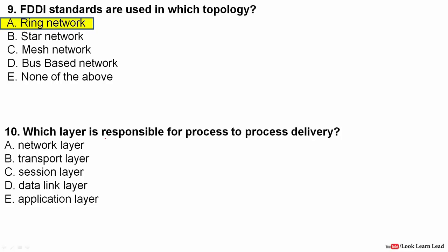Which layer is responsible for process-to-process delivery? The answer is the transport layer. The data link layer handles node-to-node delivery, whereas the transport layer handles process-to-process delivery. So transport layer is the correct answer.